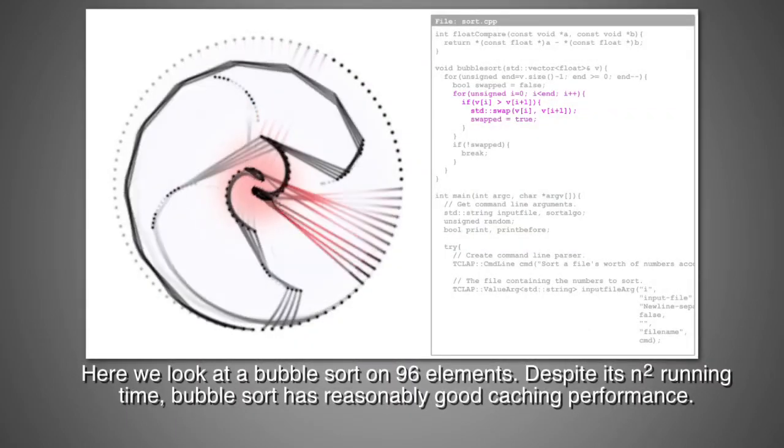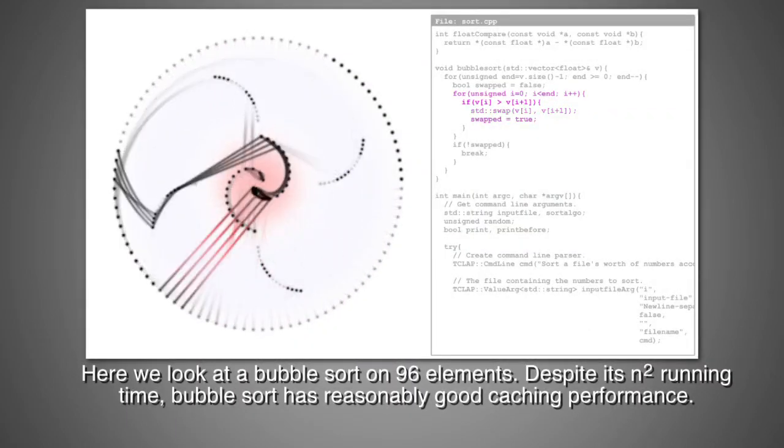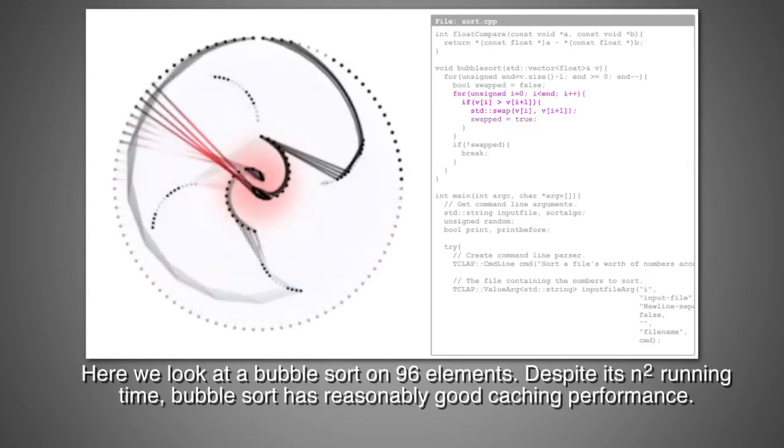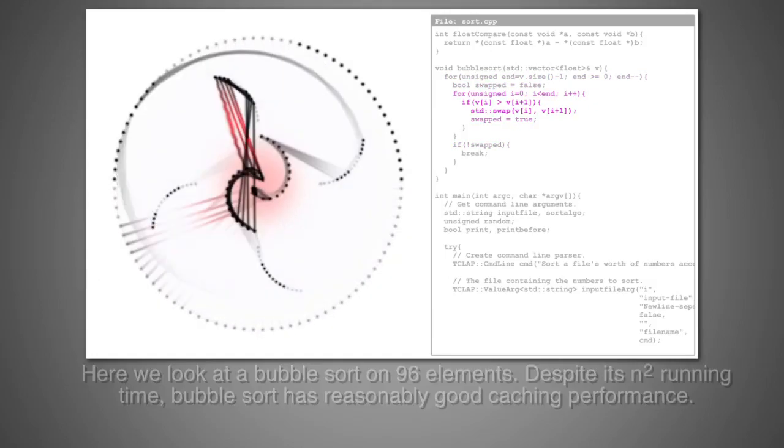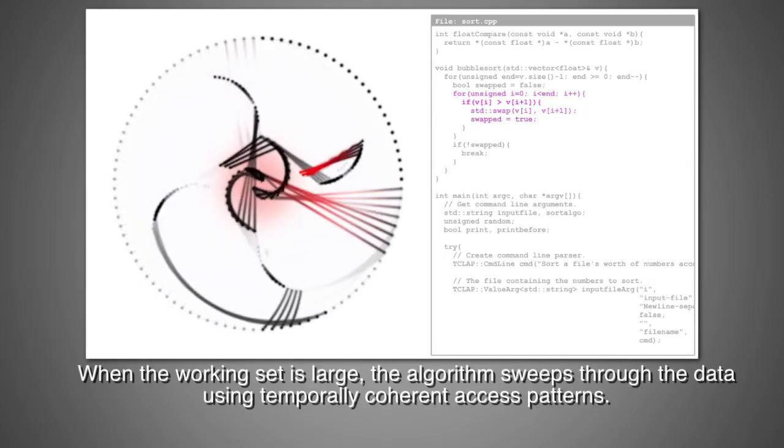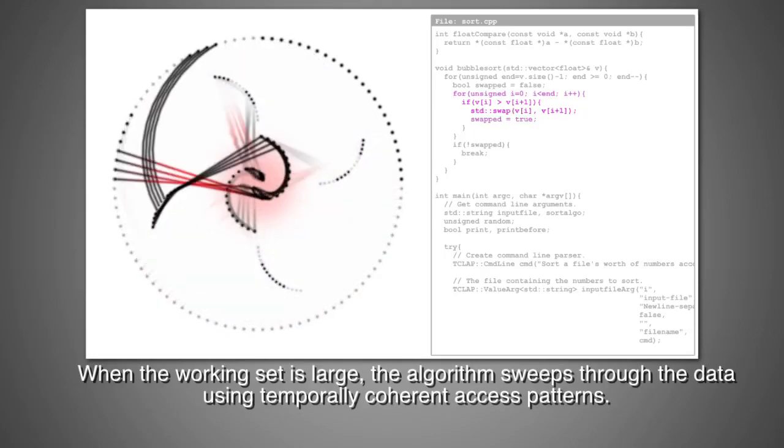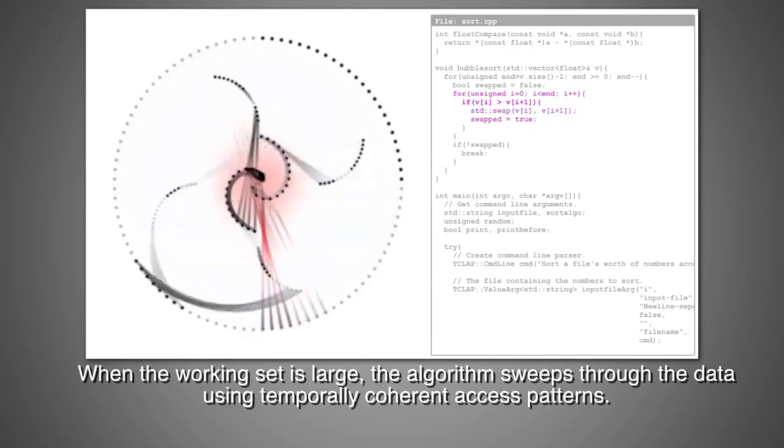Here we look at a bubble sort on 96 elements. Despite its n-squared running time, bubble sort has reasonably good caching performance. When the working set is large, the algorithm sweeps through the data using temporally coherent access patterns.